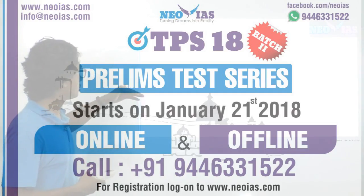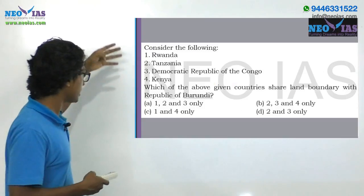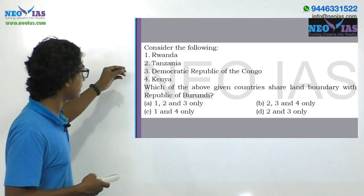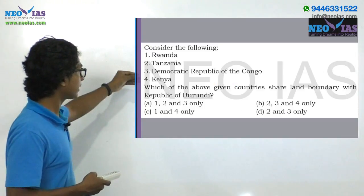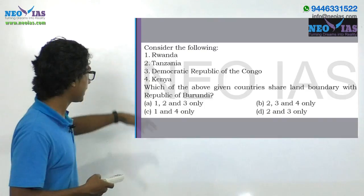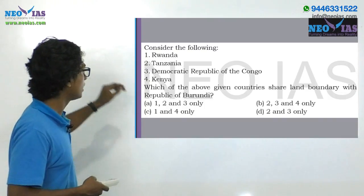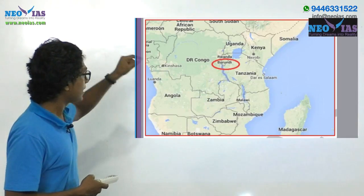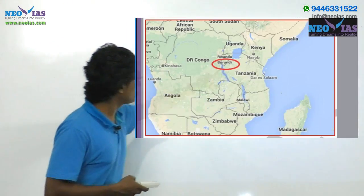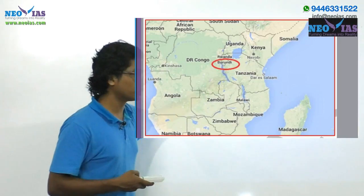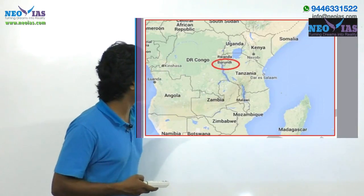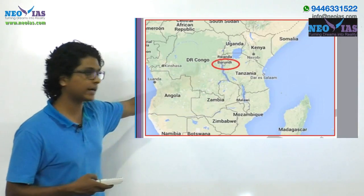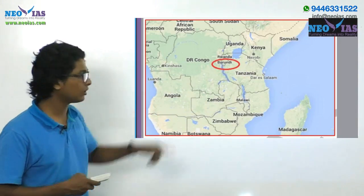Going back to the question, the four countries given are Rwanda, Tanzania, Democratic Republic of Congo, and Kenya. Kenya is not sharing a boundary with Burundi — it is Tanzania, Rwanda, and Democratic Republic of Congo.